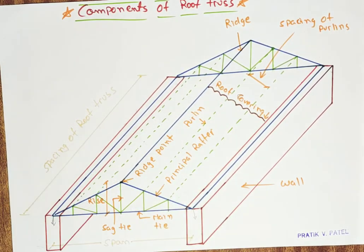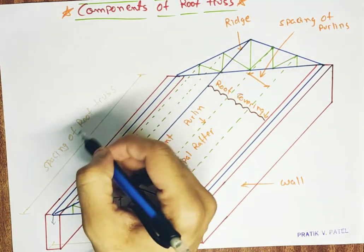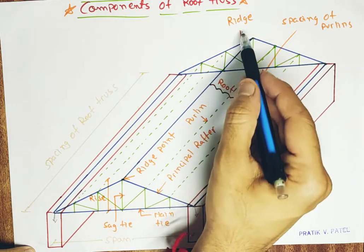So the line connecting this spacing of the roof truss from here apex to this apex is known as ridge.